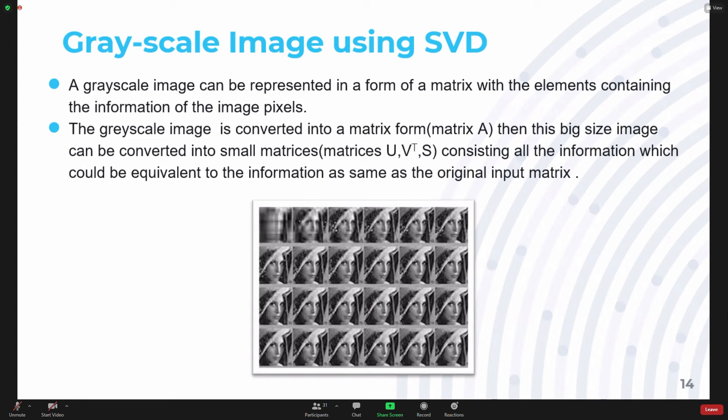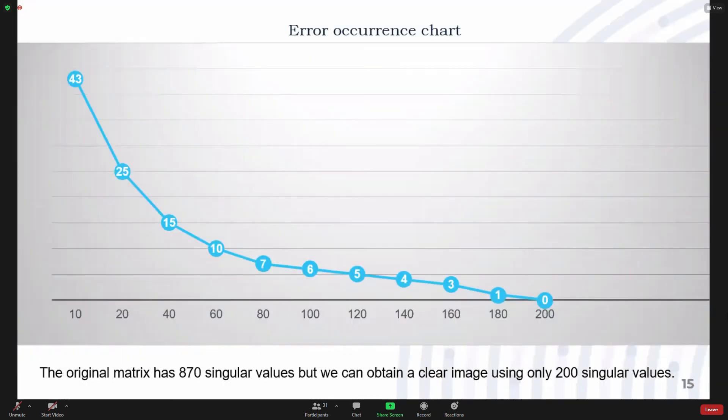This can be seen in this chart where if we add 10 terms, we get 43% image quality. As we add more terms, the error goes to zero. An original image can have a matrix containing 870 singular values, but after applying SVD, this matrix reduces to 200 singular values, which also leads to less space consumption.